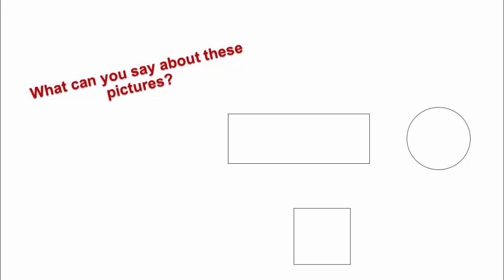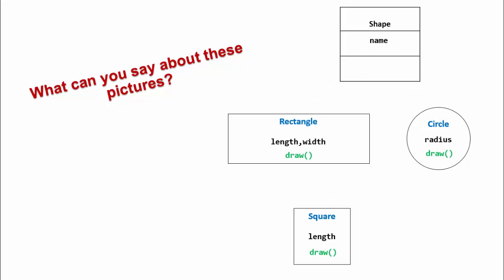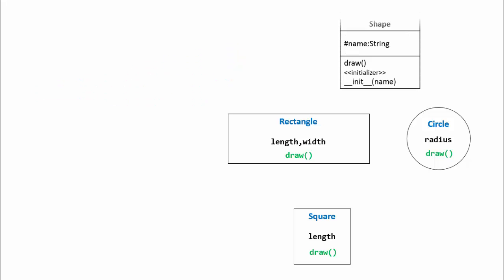What can you say about these pictures? This is a circle, this is a rectangle and this one is a square. What about their properties? Can you guess the generic term which can be used for these entities? shape, isn't it? Every shape has a name and all the shapes can be drawn. With this information, let us create a class diagram.